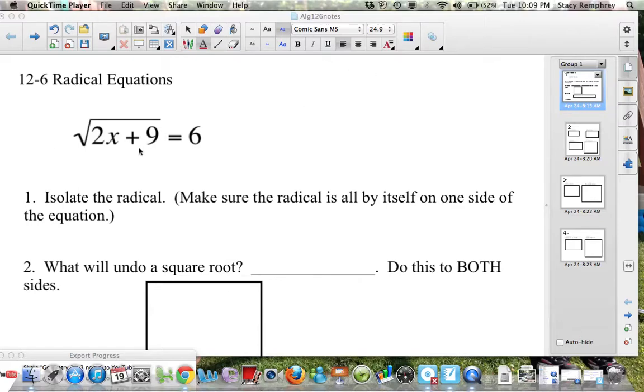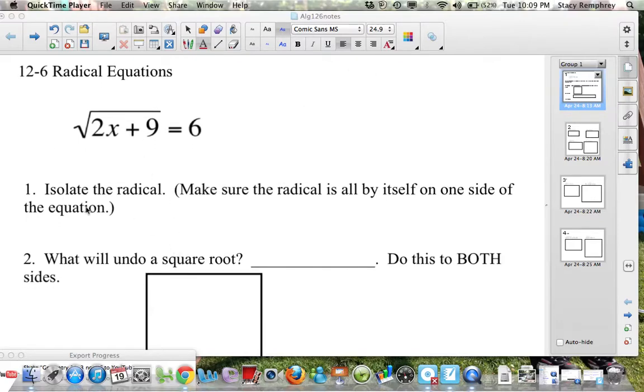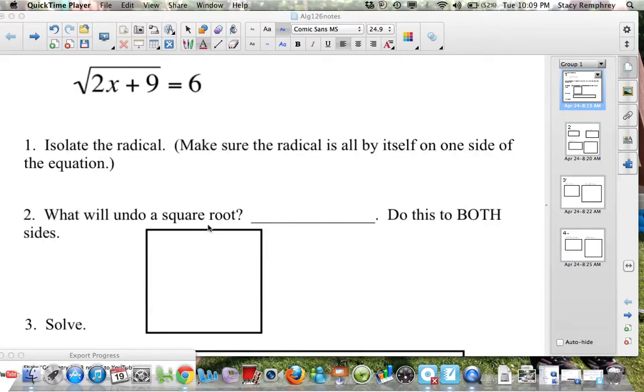So we start with the square root of 2x plus 9 equals 6. The first step, and you may want to highlight this one, is to isolate the radical. Make sure the radical is all by itself on one side of the equation. In this particular equation, it is. The square root's all by itself. So then, what will undo a square root? Squaring undoes a square root.